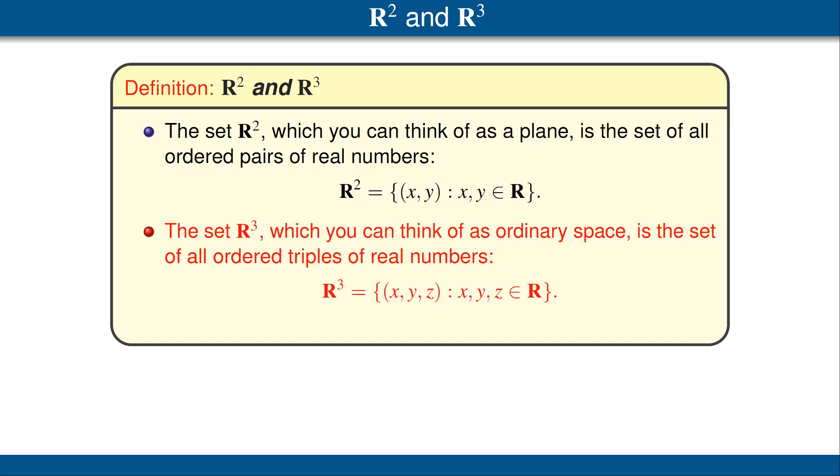Next, consider R³, which is a set of all ordered triples of real numbers. As you know, we can think of R³ as ordinary space.